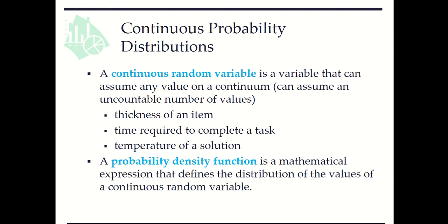Unlike a discrete random variable, here we cannot enumerate all the possible values and find their corresponding probabilities to describe the distribution. We need a probability density function, namely pdf, to define the distribution of the values of a continuous random variable.